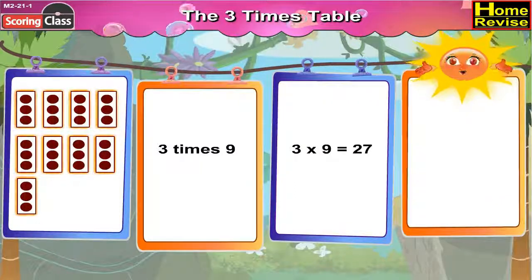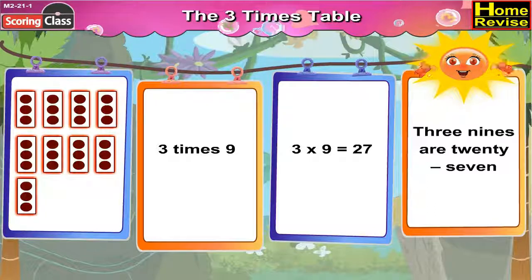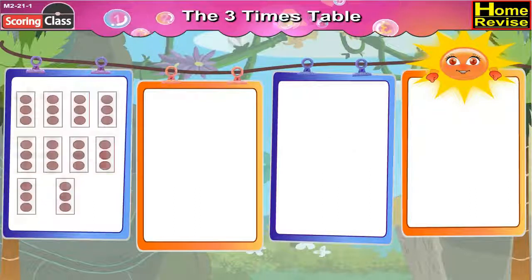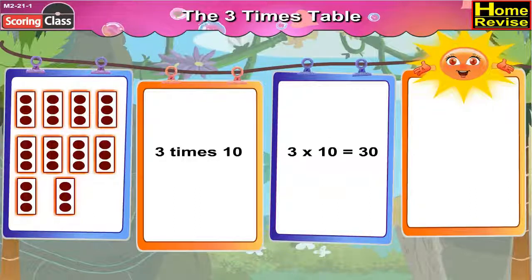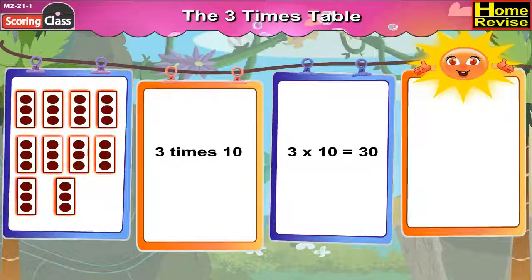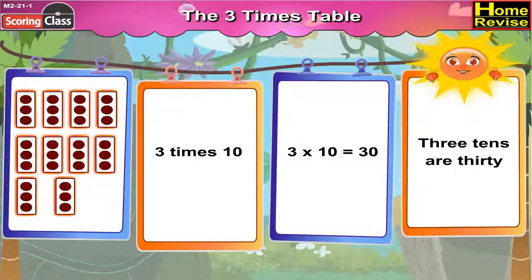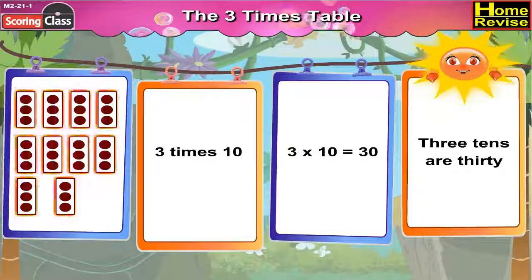Three times nine, that is three multiplied by nine, is equal to twenty-seven. We call it as three nines are twenty-seven. Three times ten, three multiplied by ten, is equal to thirty. We say it as three tens are thirty.